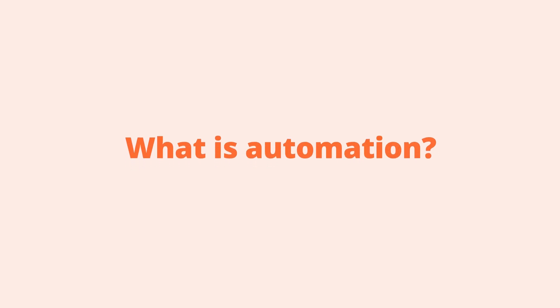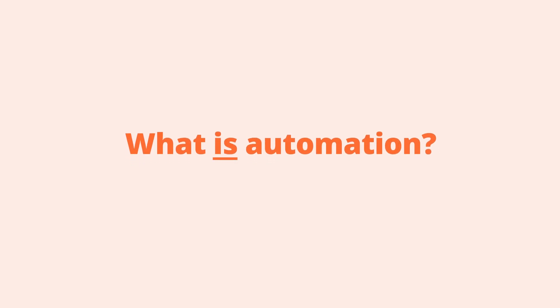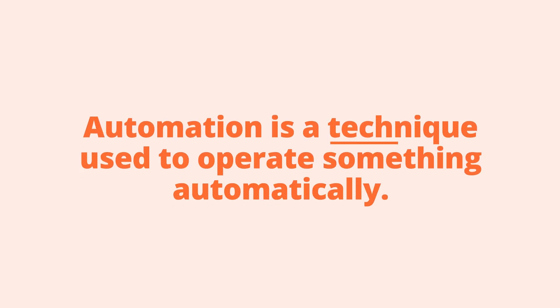Let's tackle the big question: what is automation? Automation is a technique used to operate something automatically. It saves time, eliminates human error, and most importantly, it solves problems.